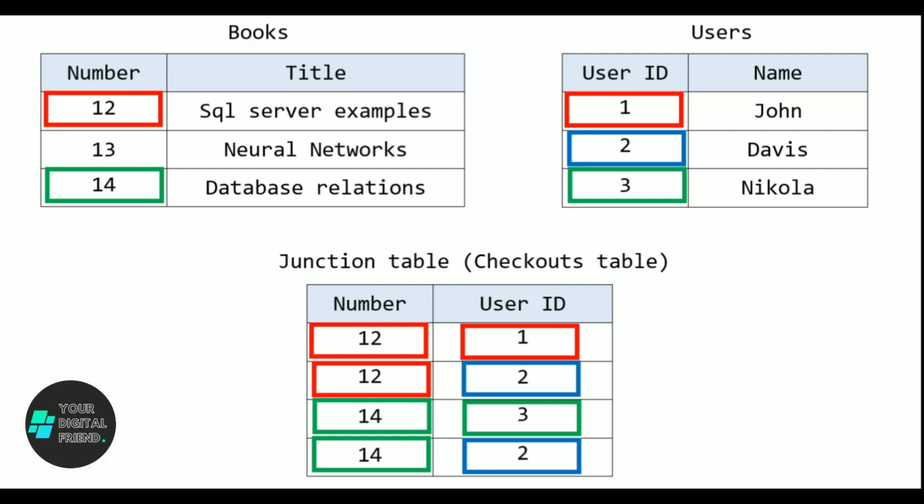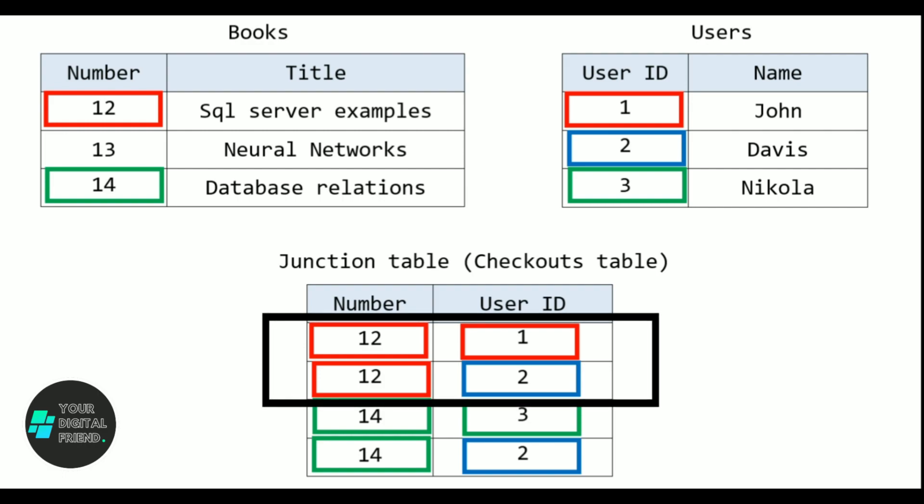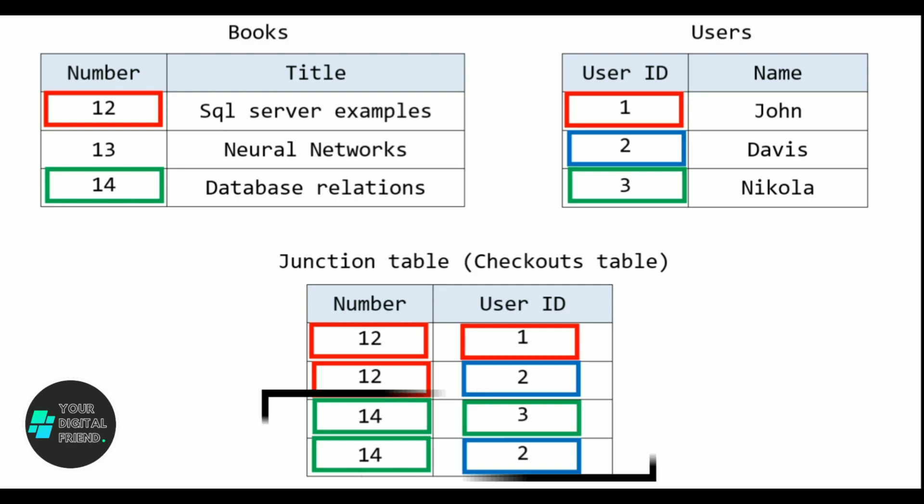For example, look at these tables. Each book can be checked out by multiple users, and each user can check out multiple books, so this represents a many-to-many relationship. The junction table maps the relationships between the books and users. For instance, the book with number 12 was taken by user 1 and user 2, and the book with number 14 was taken by user 3 and user 2.